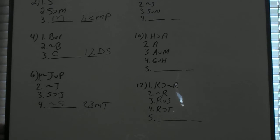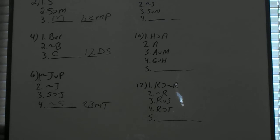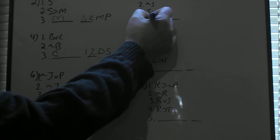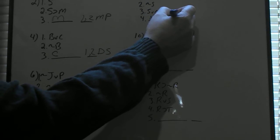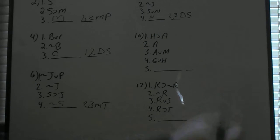For number 8, we have 'if S then W,' 'not S,' and 'S or N.' Lines 1 and 2 won't work because that would produce the fallacy of denying the antecedent. But lines 2 and 3 make a disjunctive syllogism: it's either S or N, it's not S, so it has to be N — lines 2 and 3, disjunctive syllogism.